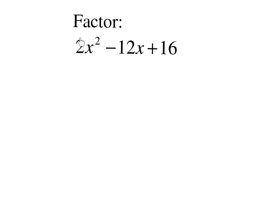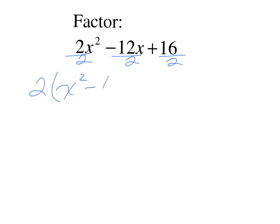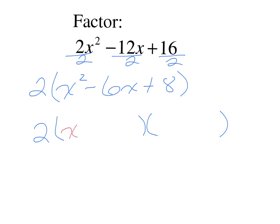This trinomial is difficult because of the 2 in front. But all the terms are divisible by 2, which means 2 is a GCF. Just like the last example, we factor out a 2 — dividing everything by 2 — leaving a trinomial with a lead coefficient of 1 that we know how to factor. The GCF of 2 stays in your final answer on the outside. x squared is x times x; bring the first sign down; multiply the signs: negative times positive makes negative. Same signs, so look for two numbers that multiply to make 8 and add to make 6. That would be 4 and 2.